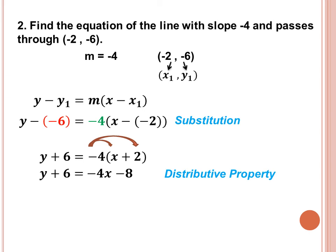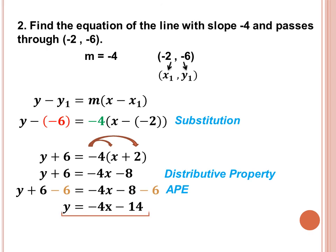Now we use APE again. The additive inverse of positive 6 is negative 6, so we add negative 6 to both sides: y plus 6 minus 6 is equal to negative 4x minus 8 minus 6. Simplifying, y is equal to negative 4x minus 14, because negative 8 minus 6 is negative 14. This is our equation of the line.